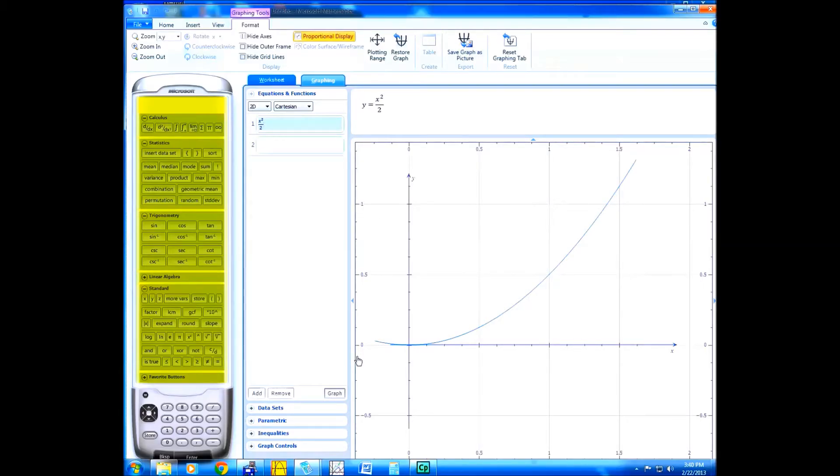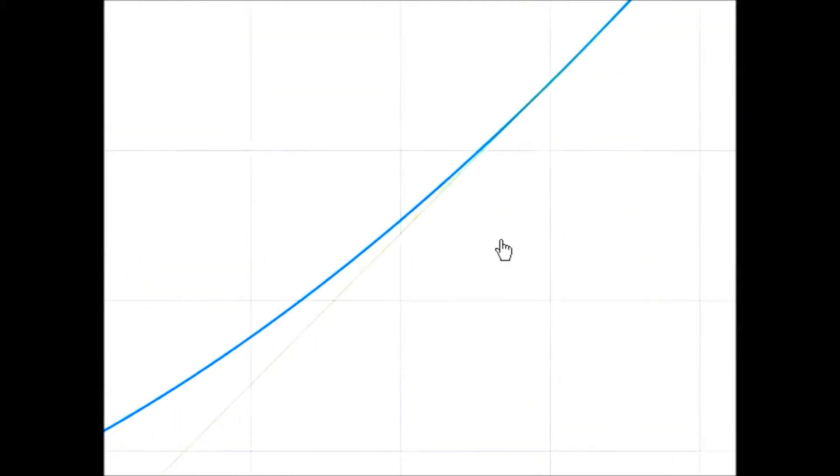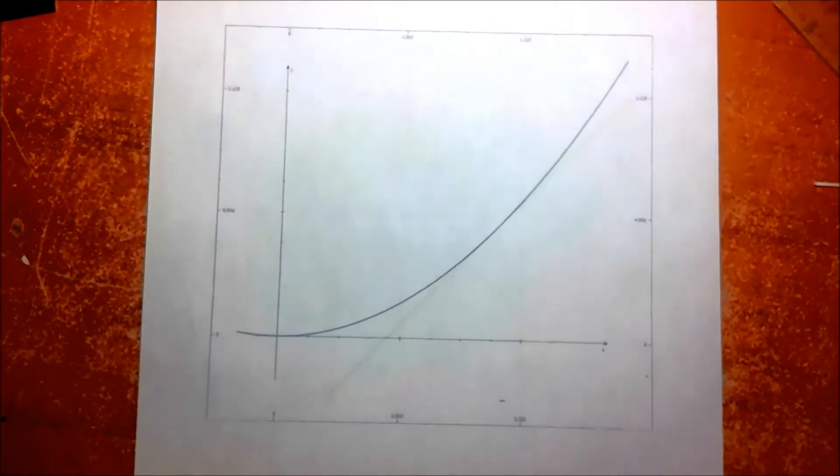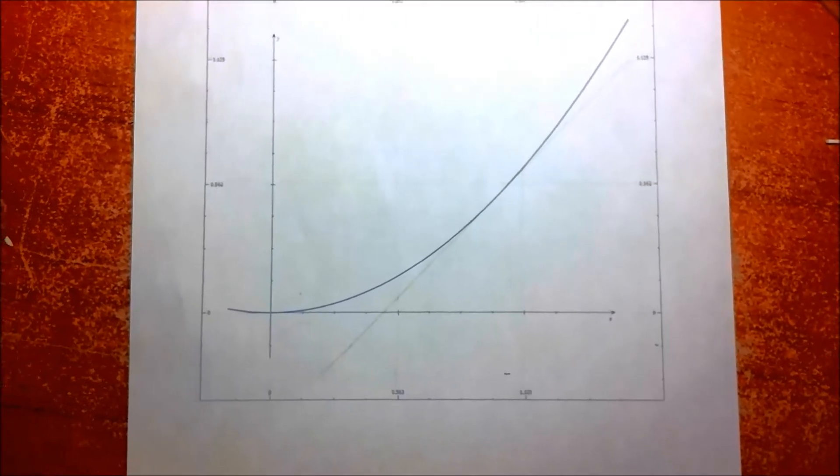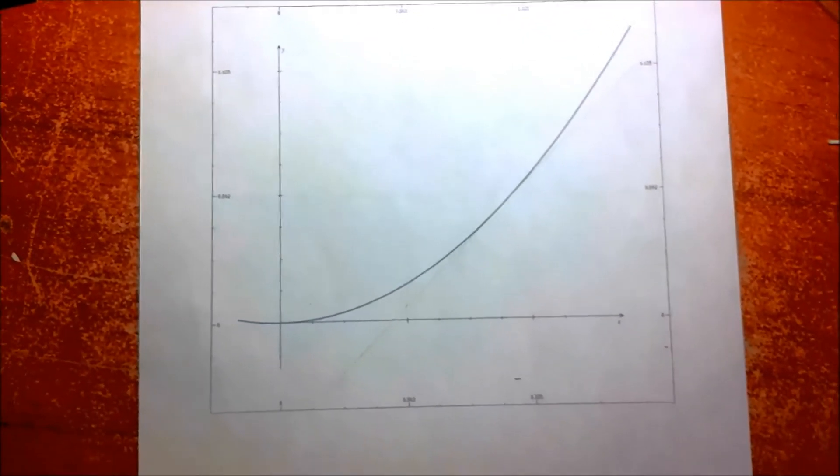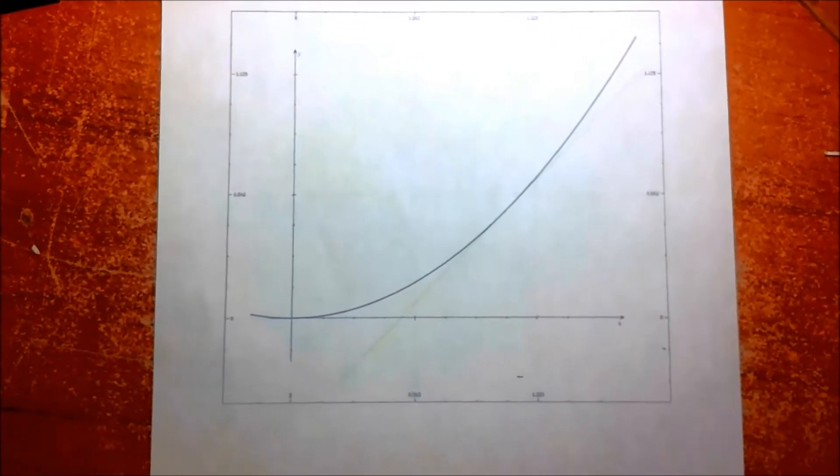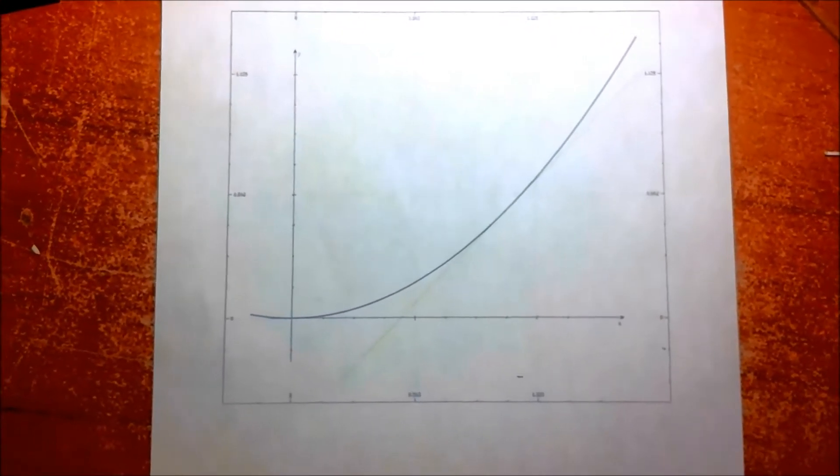Now here's the line tangent to the graph x squared divided by 2 at the point 1, 1 half. So here we have the graph of x squared divided by 2, and there's a tangent at the point x equals 1, y equals 1 half.